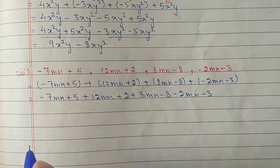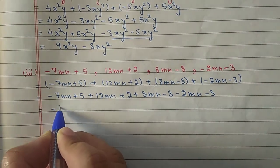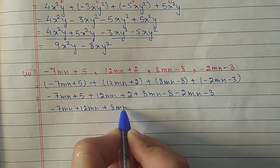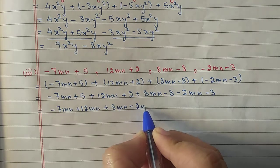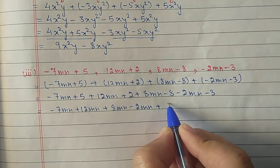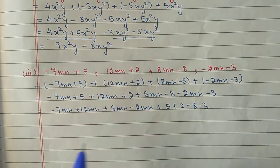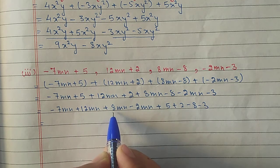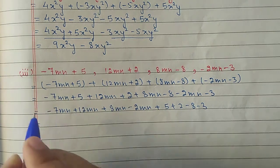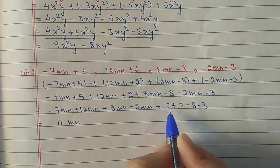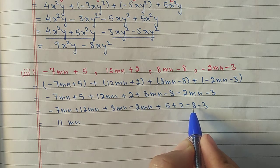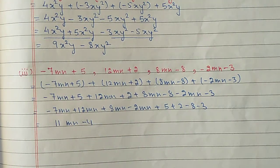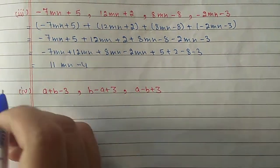Now like terms together: minus 7mn plus 12mn plus 8mn minus 2mn, and constant terms 5 plus 2 minus 8 minus 3. Simplifying: minus 7 plus 12 is plus 5, 5 plus 8 is 13, 13 minus 2 is 11, so 11mn. For constants: 5 plus 2 is 7, 7 minus 8 is minus 1, minus 1 minus 3 is minus 4. Answer: 11mn minus 4.